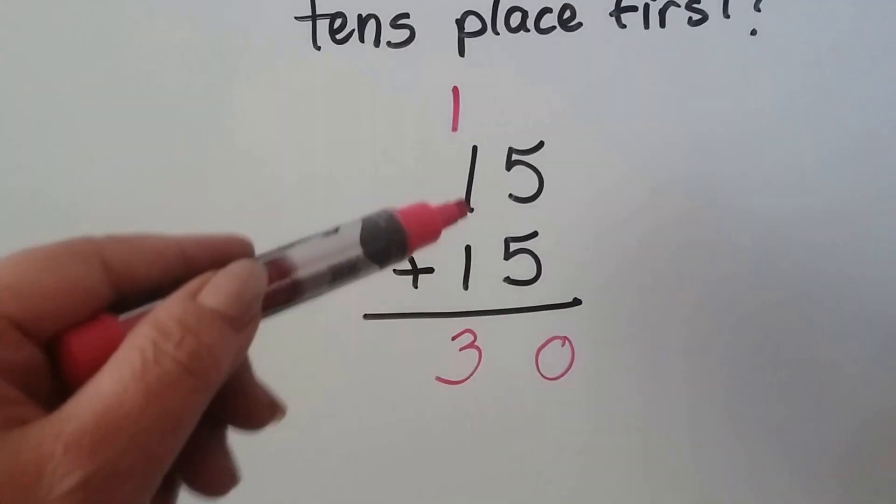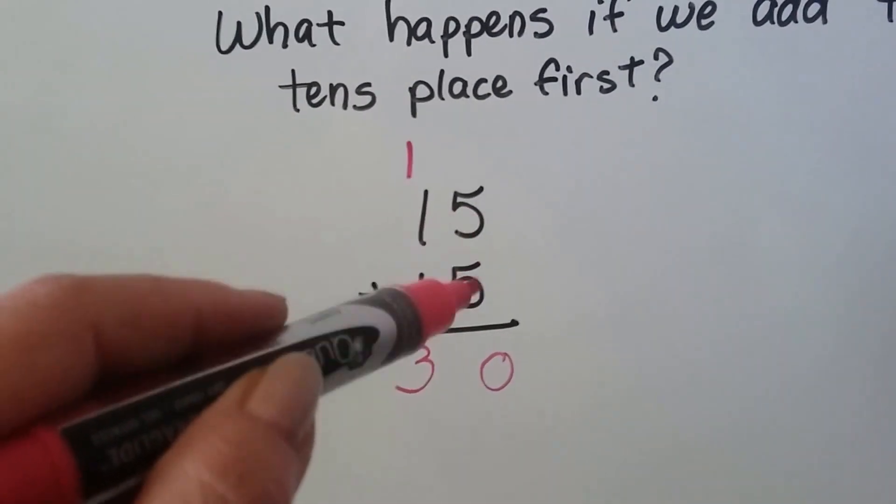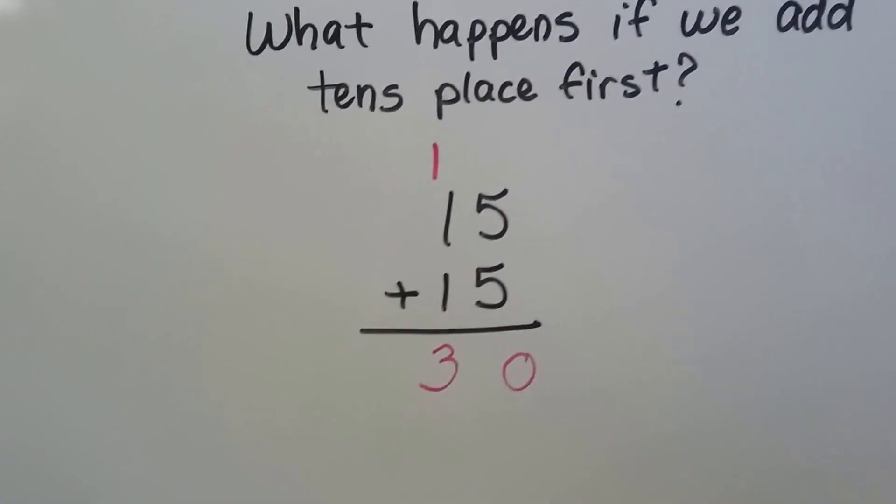If we start with the tens, we'd only see a 2 there. See? We get the wrong answer. So remember, always start with the ones place, and then move to the next place value to the left.